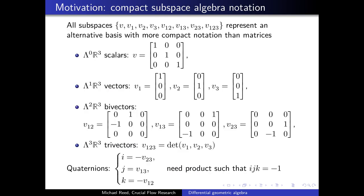The motivation behind geometric algebra is a compact subspace algebra notation. All the subspaces represent an alternative basis with a more compact notation than matrices. As an example, in three dimensions we'd rather not represent a unit scalar with a full matrix representation, or we'd rather not represent a unit vector with a full column vector representation.